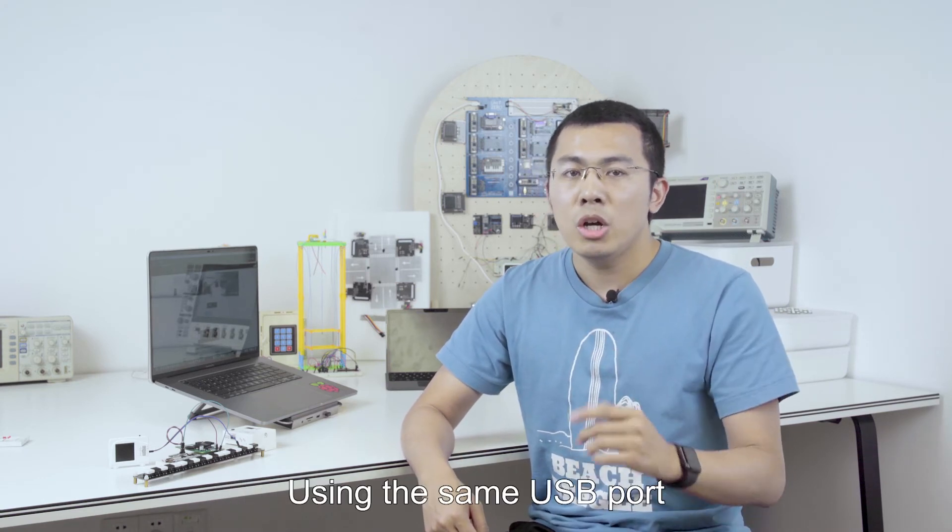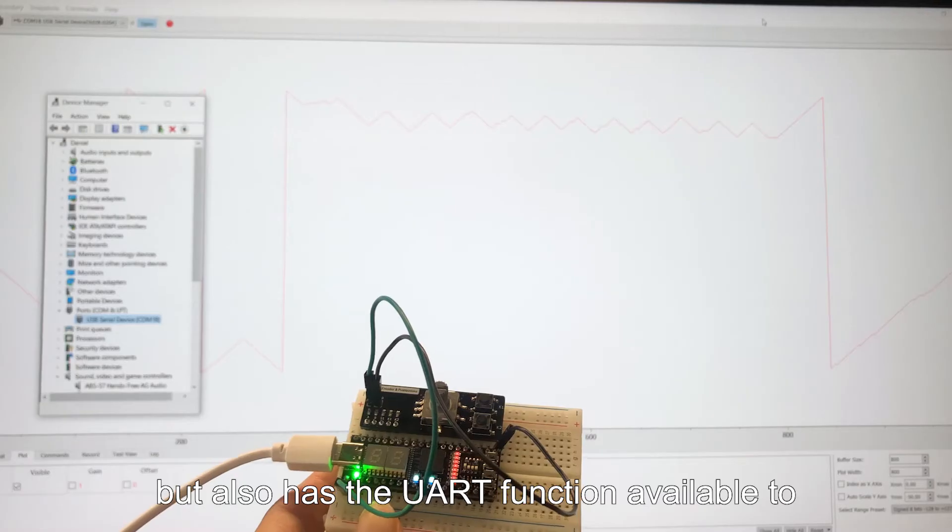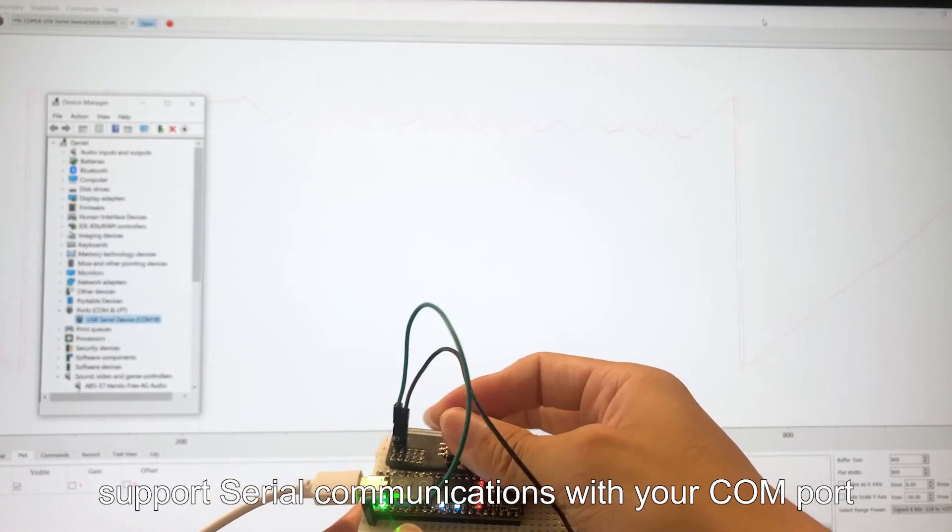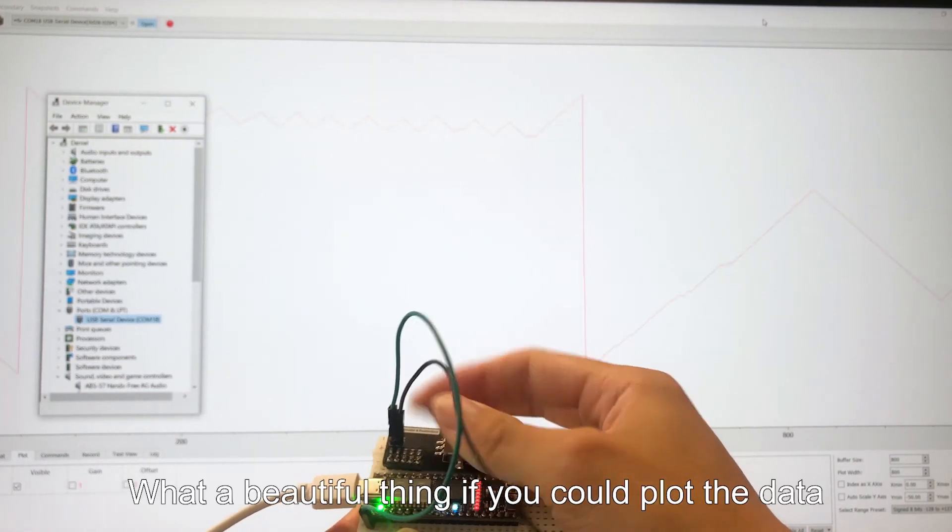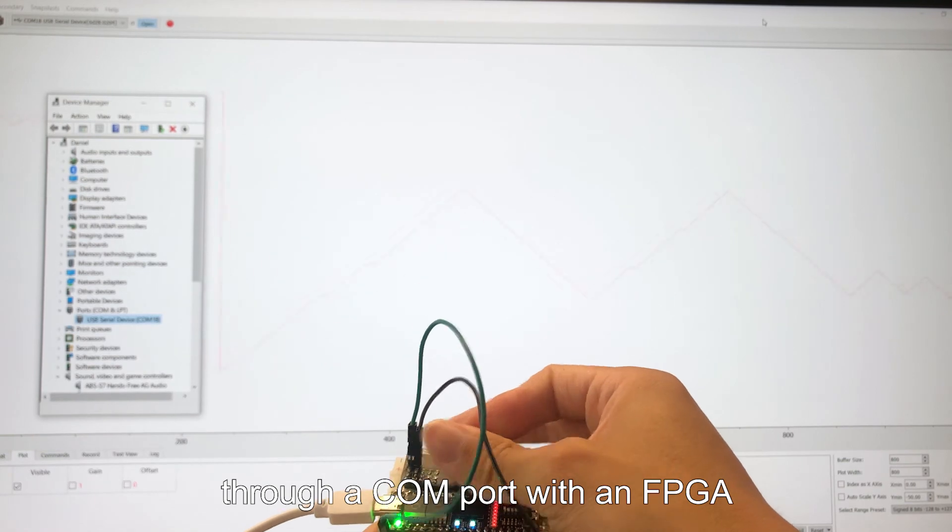And last but not least, about debugging. Using the same USB port, this port not only enables you to burn programs easily, but also has a UART function available to support serial communication with your COM port. What a beautiful thing you could just plot your data through a COM port with an FPGA.